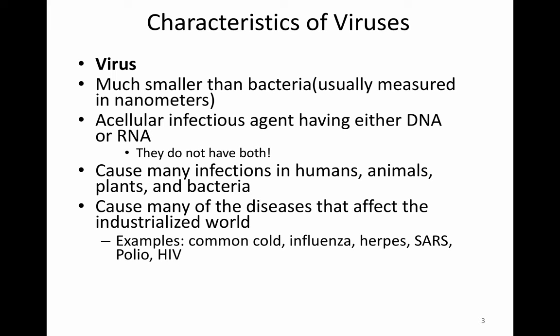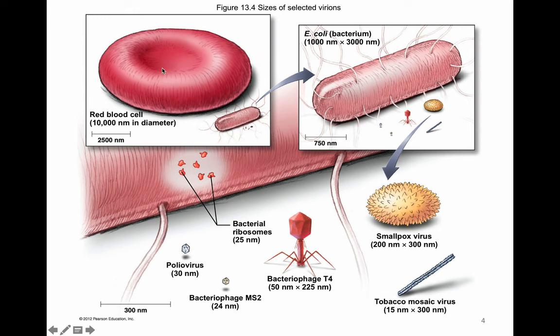Just a reminder: these viral infections are not treated with antibiotics. There are antiviral medications used for certain scenarios — when somebody has HIV or hepatitis, for example. For influenza, there's Tamiflu, which isn't often prescribed because it is expensive and usually isn't needed. Looking at the size of a red blood cell compared to bacteria: bacteria are much smaller than a red blood cell, and bacteria are much larger than viruses. A bacterial ribosome might be 25 nanometers, while the polio virus is around 30 nanometers — very, very tiny infectious agents.